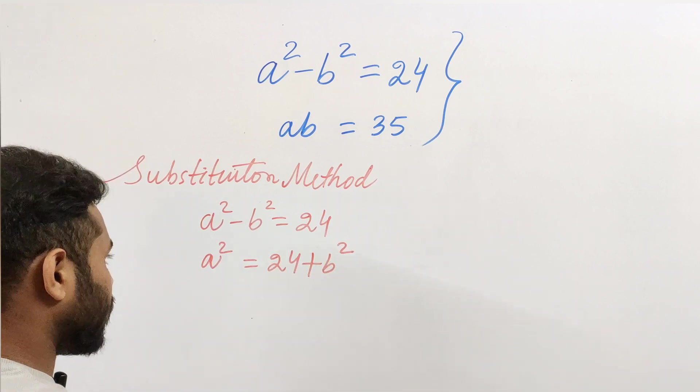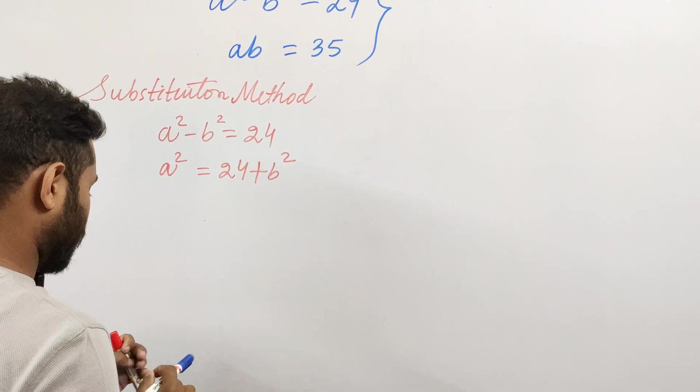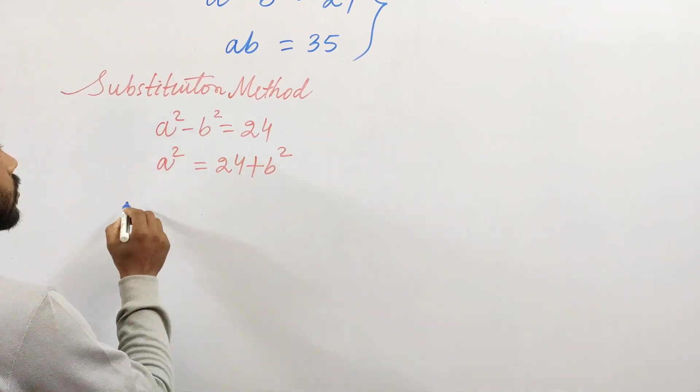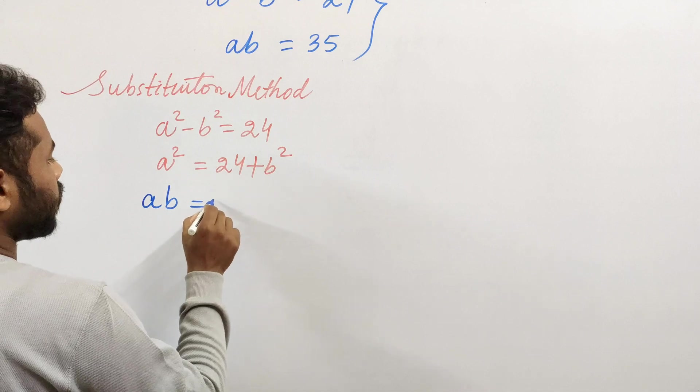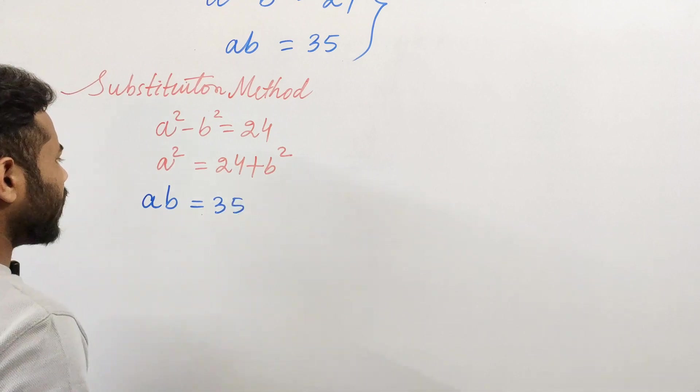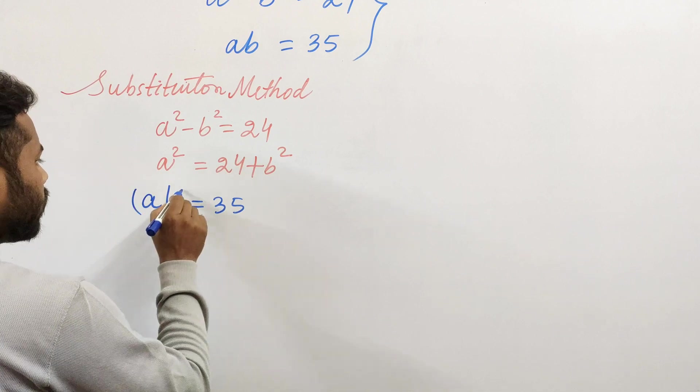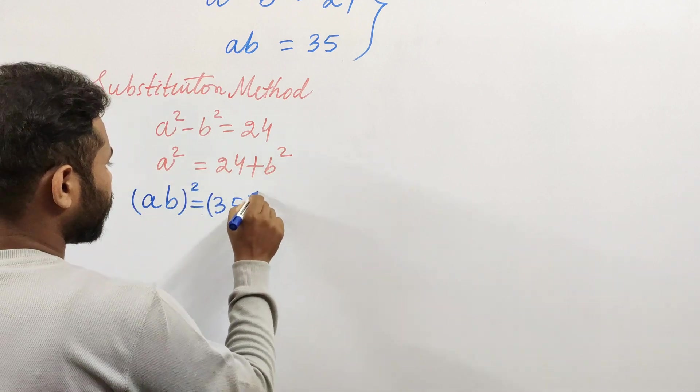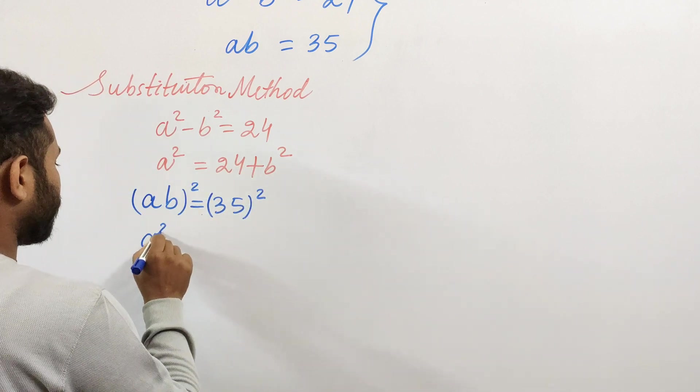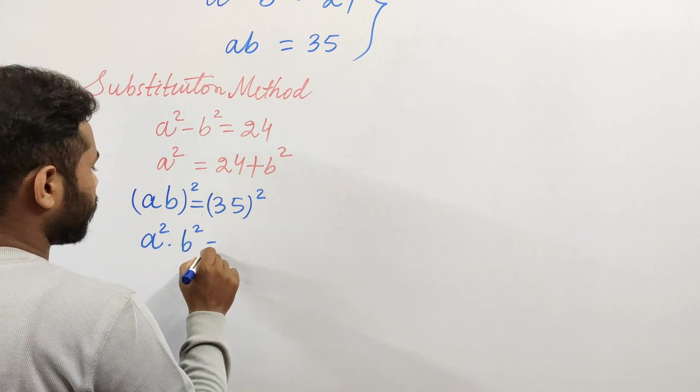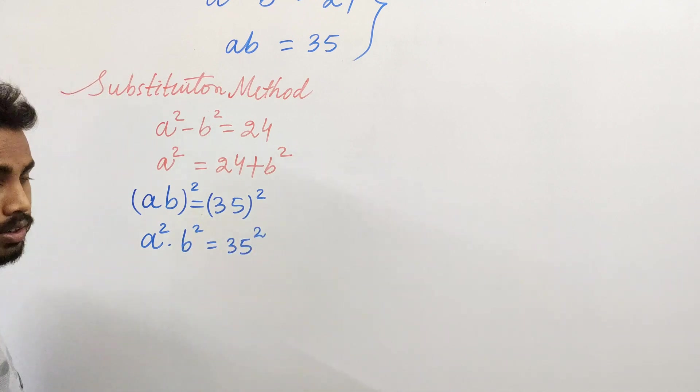We have the second equation, ab = 35. Let's square both sides so that it becomes a² × b² = 35². And now I'm ready to use the a² value.